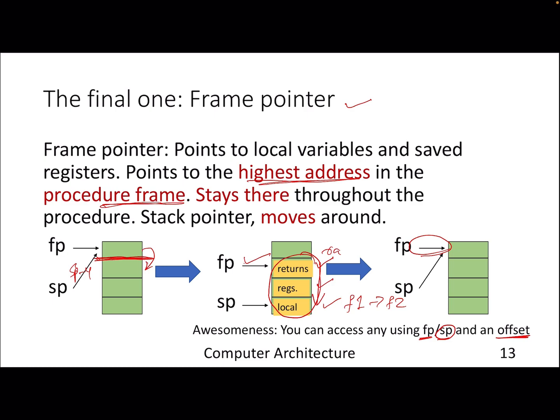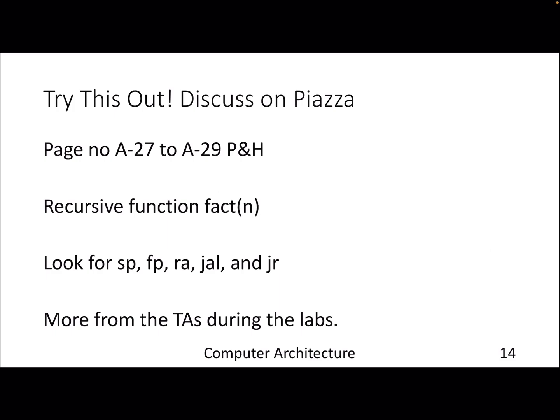There's one thing I want all of you to try: go to Patterson and Hennessy and look in the appendix, specifically page 827, for the MIPS conversion of a factorial code — finding the factorial of a number. That will help your understanding of stack frames and how stack space is used for calling, caller saving, and preserving data across functions. You will find these keywords we have discussed, and you may find additional keywords during the labs through your TAs.